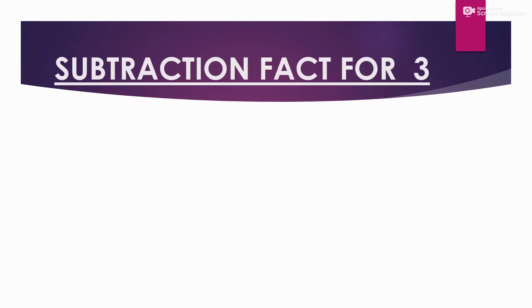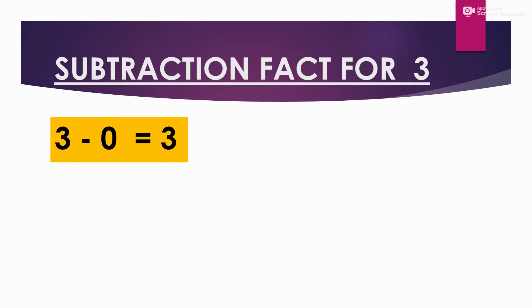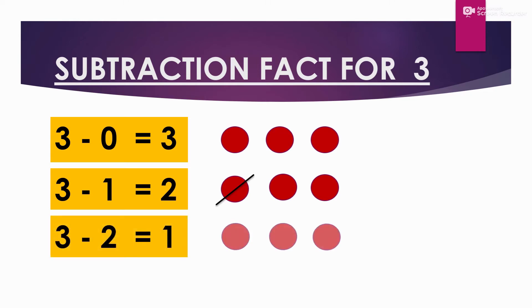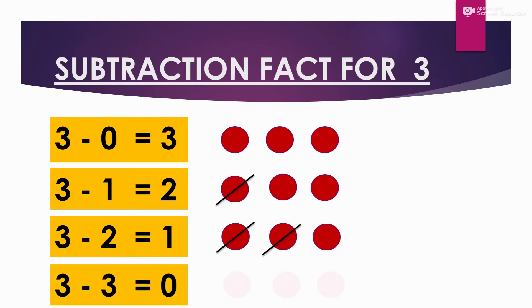Subtraction Fact for No. 3. We have 4 Subtraction Facts for No. 3. 3-0 equals to 3. 3-1 equals to 2. 3-2 equals to 1. 3-3 equals to 0.